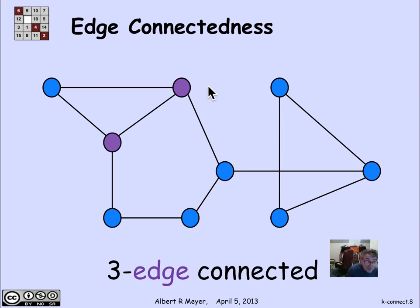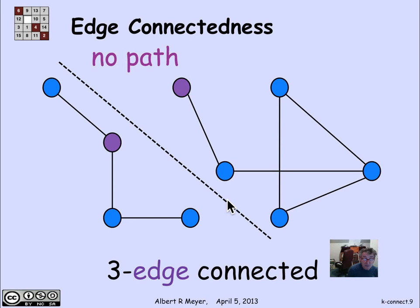And if you remove three, on the other hand, you can separate them. So if I cut these three edges, I might have been more obvious to cut that one, but I'm doing it this way to make it interesting. If I cut these three edges, then in fact I wind up with no path between those two vertices.